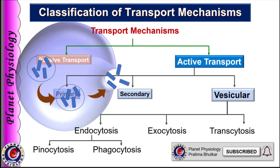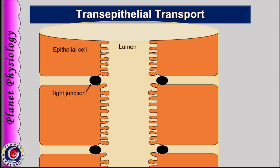Apart from these mechanisms, substances are also transported across the endothelia or epithelia, that is from one side of the epithelium to the other side, such as while crossing the capillary wall, gastrointestinal tract, renal tubules, or other structures in the body. In such cases, epithelia possess tight junctions and different sets of transport proteins on their luminal and basolateral surfaces. Such transport is called transepithelial transport.